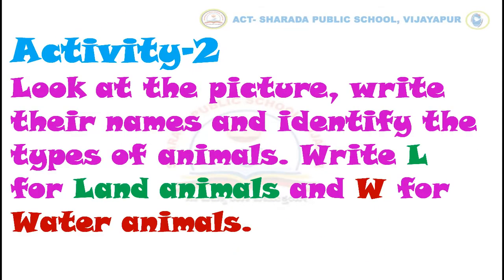Let's continue with activity number 2. Look at the pictures, write their names and identify the types of animals. Write L for land animals and W for water animals.